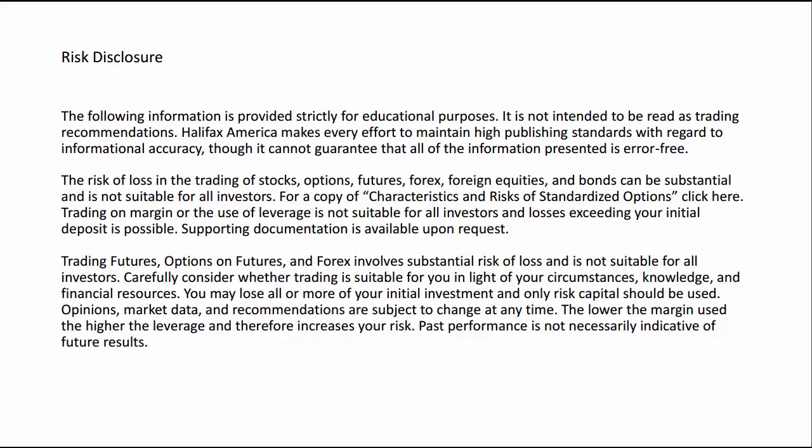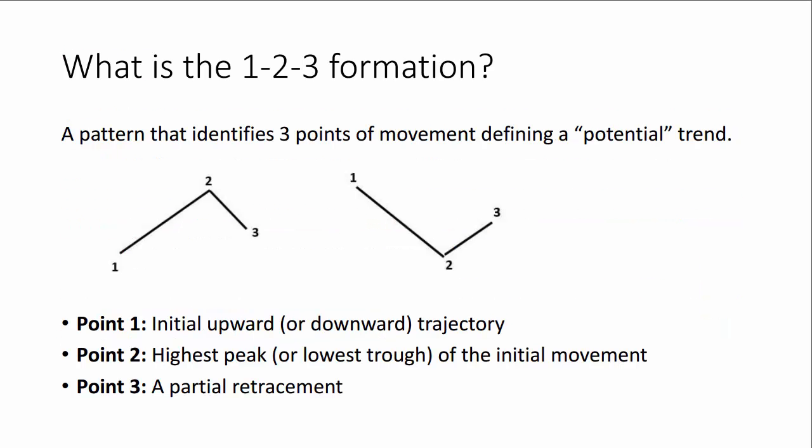Okay, let's get started. First, what is the 1-2-3 Formation? The 1-2-3 Formation is a pattern that identifies three points of price movement. Point one is the initial upward or downward trajectory of price movement. Point two is the highest peak or lowest trough of the initial movement. And point three is a partial retracement from the peak or trough moving in the opposite direction. Now, why is this pattern so important?